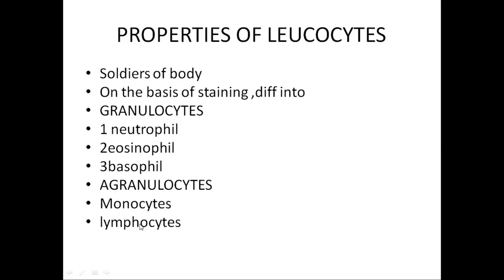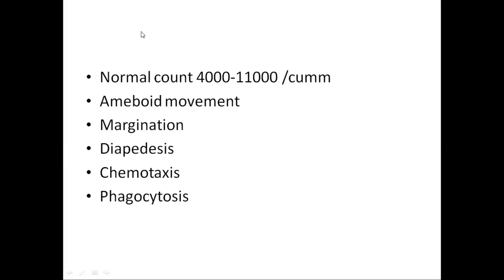The normal count of WBCs is 4,000 to 11,000 per cubic millimeter. WBCs have amoeboid movement, just like an amoeba, because they send out pseudopodia in all directions and the whole body moves toward it. Next is margination, which is defined as WBCs lining up at the wall of the blood vessel, mostly on the surface of the endothelial cell.